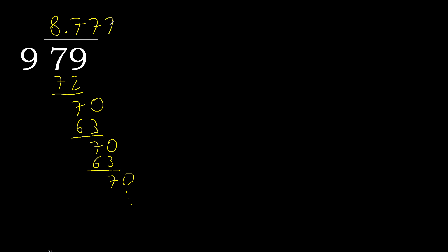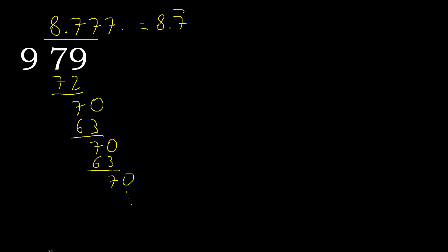Therefore 7 repeats. 79 divided by 9 is 8, and after the point, 7 repeats — therefore like this, repeat. Equal. Ok, finish it.